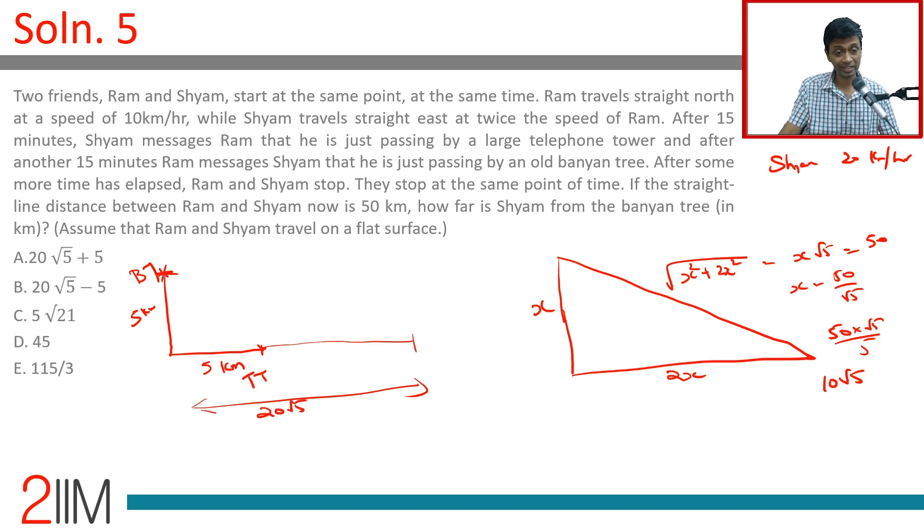We want to find the straight line distance. This will be √(5² + (20√5)²). 20 squared is 400, and 400 times 5 is 2000.